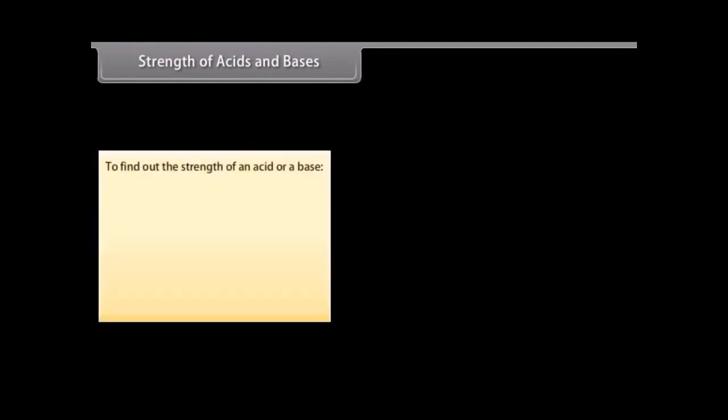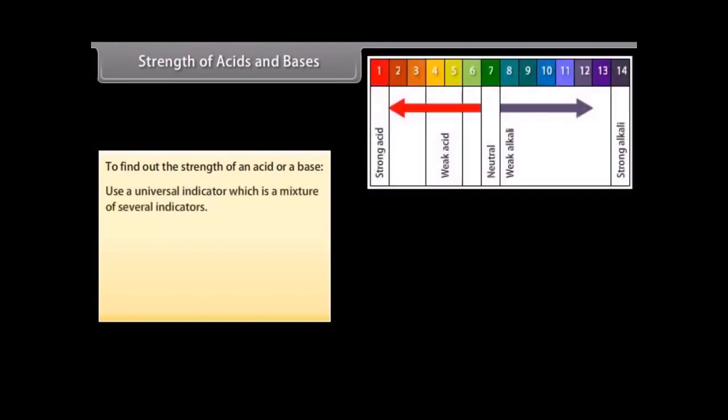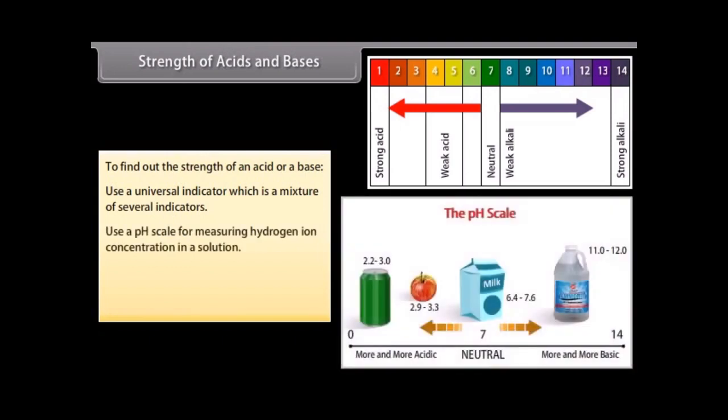Strength of acids and bases. You need to use a universal indicator to find the amounts of ions present in a solution or to find out how strong an acid or base is. The universal indicator is a mixture of several indicators. It shows different colors at different concentrations of hydrogen ions in a solution. A pH scale is a scale of measuring hydrogen ion concentration in a solution. You can measure pH from 0, which represents very acidic, to 14, which represents very alkaline. Neutral elements have a pH value of 7.